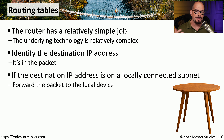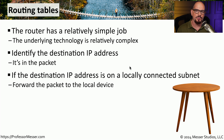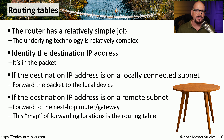The router then examines some tables to determine what the best route will be for this particular packet. If the destination IP address of this particular packet is associated with a subnet that is directly connected to this router, then the router simply sends the packet onto that local subnet. But in many cases, the destination IP address is on a subnet that is not locally connected to this router. The router will examine that routing table, determine what the best next hop might be, and then send the traffic out that particular interface.